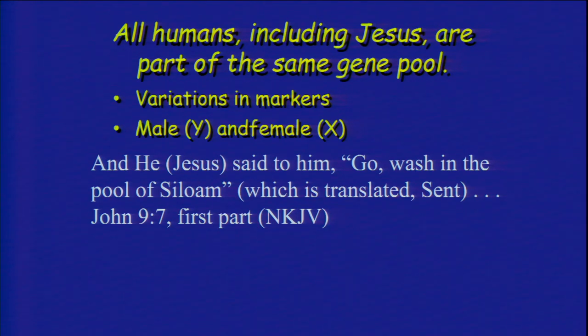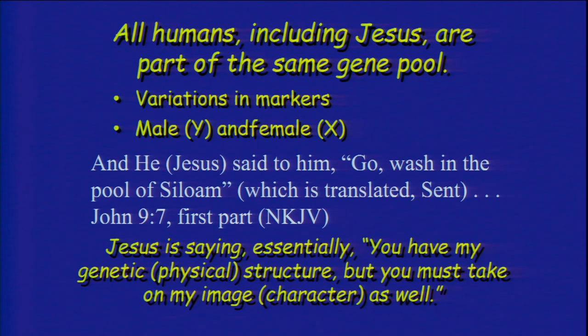And He — Jesus — said to the blind man, 'Go wash in the pool of Siloam,' which is translated 'sent.' Jesus is essentially saying: you have my genetic, physical structure — you've already got it. You're part of my DNA, as it were. They've even found recently that DNA can tell eye color, skin color, and many other characteristics — they've actually identified criminals by their DNA before ever seeing them.